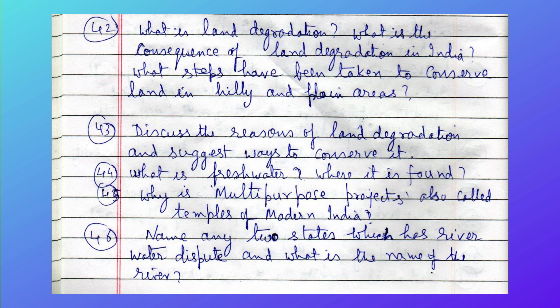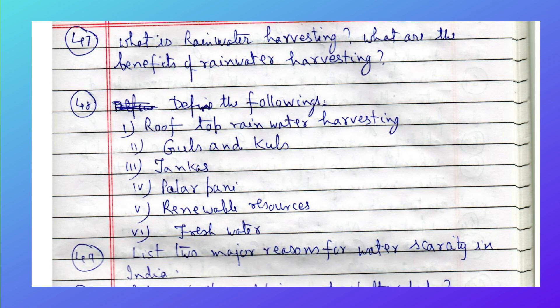Name any two states which have river water disputes and what is the name of the river involved. What is rainwater harvesting? What are the benefits of rainwater harvesting? Define the following: rooftop rainwater harvesting, kuls and kuls, tankas, and Paalar Pani. What are renewable resources and freshwater?